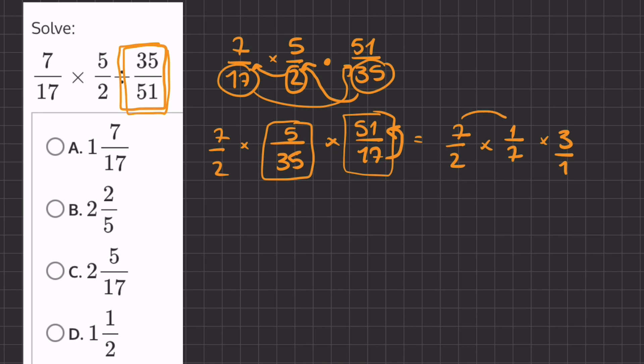So, 7 times 1 times 3 is going to be 21. And 7 times 2 is going to give us 14. Now, let's simplify this fraction and turn it into a mixed number. We'll ask ourselves, how many times does 14 go into 21?